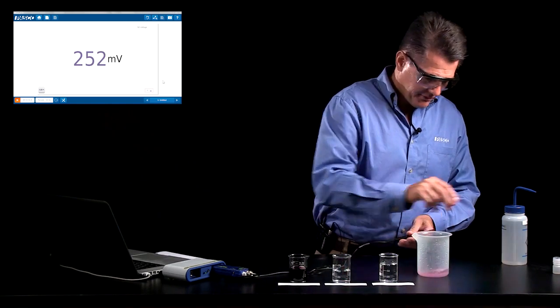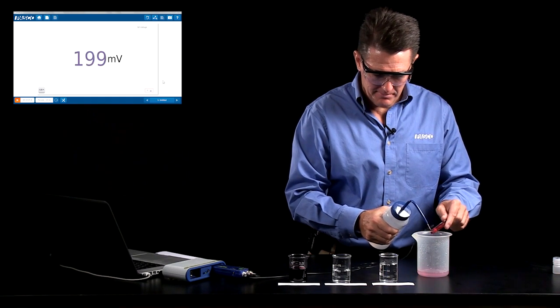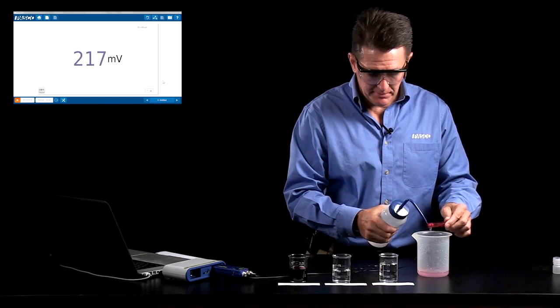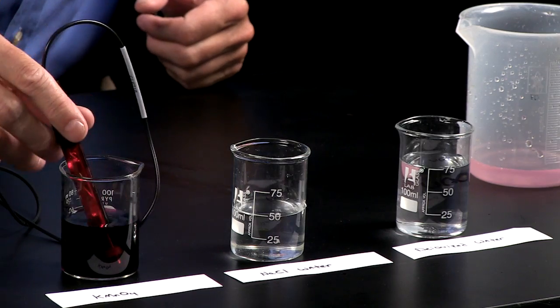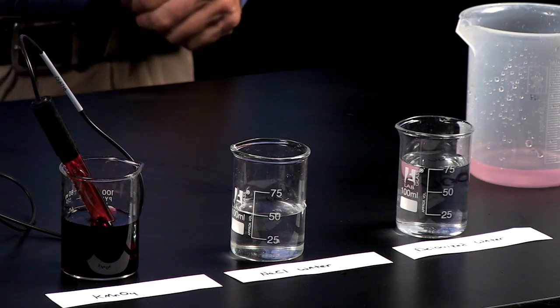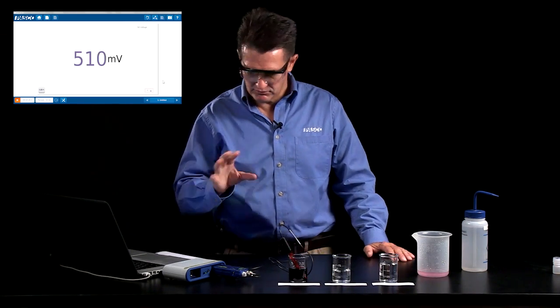I'm going to rinse this off before I place it in my next solution, which is potassium permanganate. Potassium permanganate is a known aggressive oxidizer, so I would expect to get significantly higher readings by placing it in there. And yes, I can see that I'm about 513 or so.